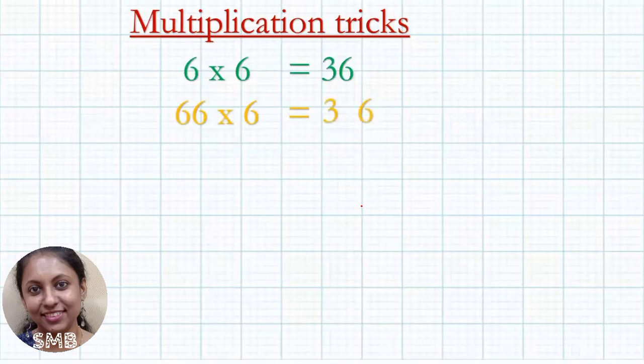Then what is 666 into 6? 666 into 6, first 3, last 6. And here in the multiplicand 3 sixes are there, so 2 nines should come in the middle of the end. So 3996.